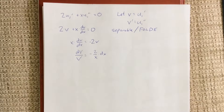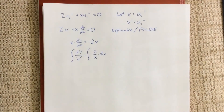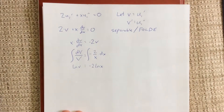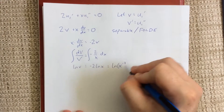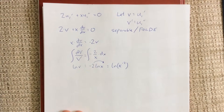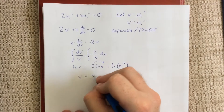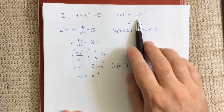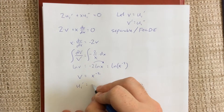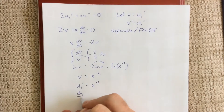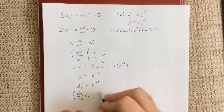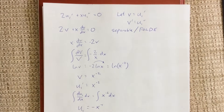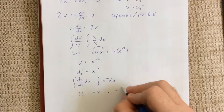This gives us dv over v is equal to negative 2 over x dx — an equation that is just begging to be integrated. On the left-hand side we have the natural log of v; on the right-hand side, negative 2 times the natural log of x. Normally we'd see a plus c, but a constant of integration is not necessary here. Applying the logarithm rule to move the negative 2 into the exponent, then exponentiating both sides, we get v equals x to the negative 2. Substituting back, u1 prime equals x to the negative 2. Integrating both sides with respect to x and using the power rule gives u1 equals negative x to the minus 1, or negative 1 over x.